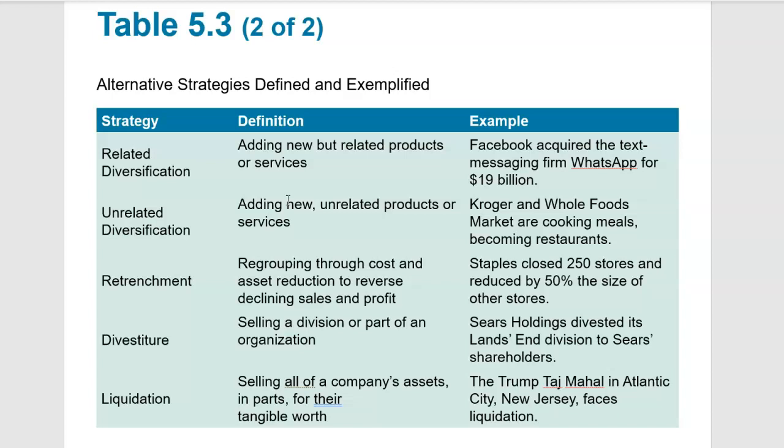Retrenchment is regrouping by going backwards a little bit — reducing the scope of things, reducing costs and assets. Sometimes a retrenchment is: something's not working, let's close our unprofitable stores, retrench and regroup, then move out again at a later date.